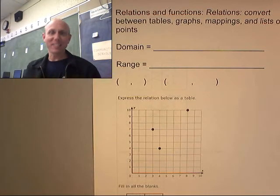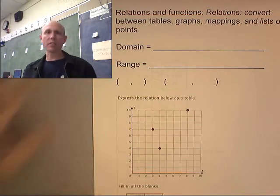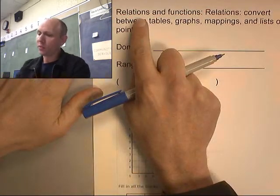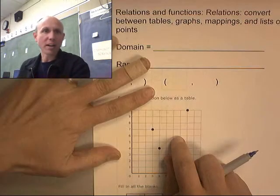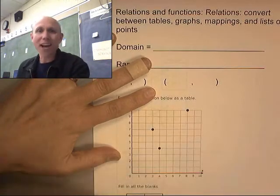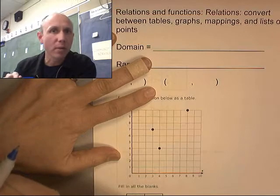All right, this is Mr. Barr, and it is time to talk about some math. So here it is. We've got relations. You can't see this finger over here. I'm glad, because it's got a band-aid on it. Why? Because I got a crazy paper cut earlier today.